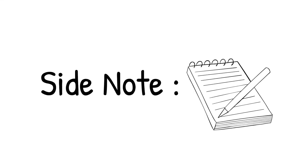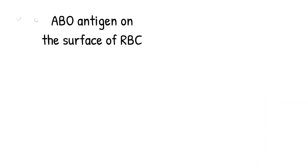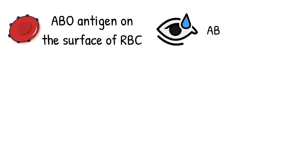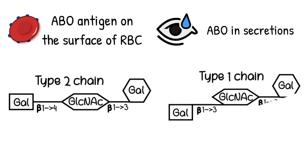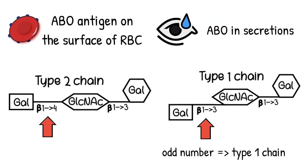As a side note, in most people the ABO antigens can be found on the surface of red blood cells and in secretions. However, the antigen structure is different. The structure on red blood cells is a type 2 chain, but the structure in secretions is a type 1 chain. The difference between type 1 and type 2 chain is where the galactose attaches to the N-acetylglucosamine. Type 1 chain is when galactose attaches at beta-1,3 linkage, whereas type 2 chain is when galactose attaches at beta-1,4 linkage. Just remember: odd number goes with odd — type 1, beta-1,3 linkage, found in secretions; even number goes with even — type 2, beta-1,4 linkage, on the surface of red blood cells.